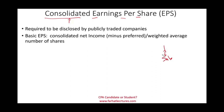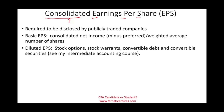We have to compute both basic and diluted earnings per share. Basic EPS is computed by taking consolidated net income minus the preferred dividend, divided by the weighted average number of shares outstanding. Diluted EPS exists when we have stock options, stock warrants, convertible debt, or any sort of convertible securities. We discussed this topic in detail in intermediate accounting.